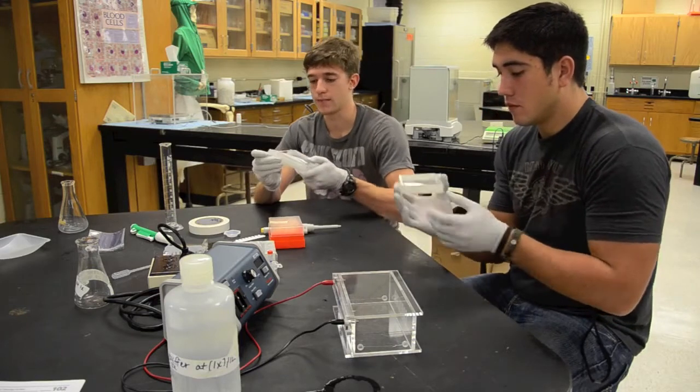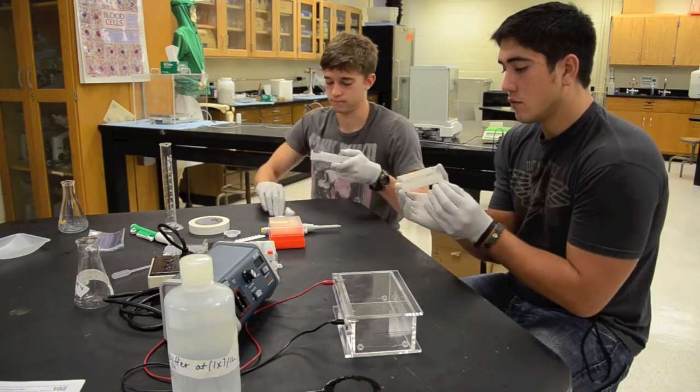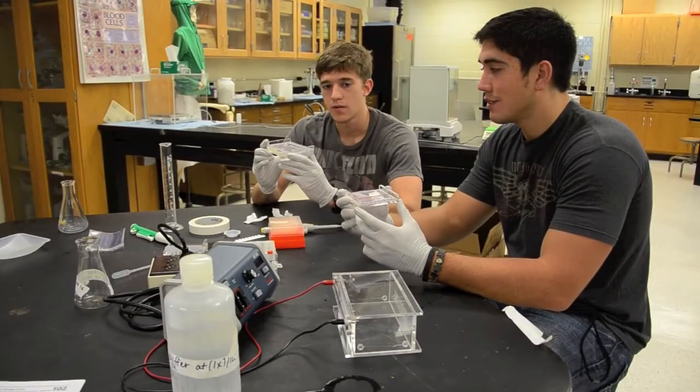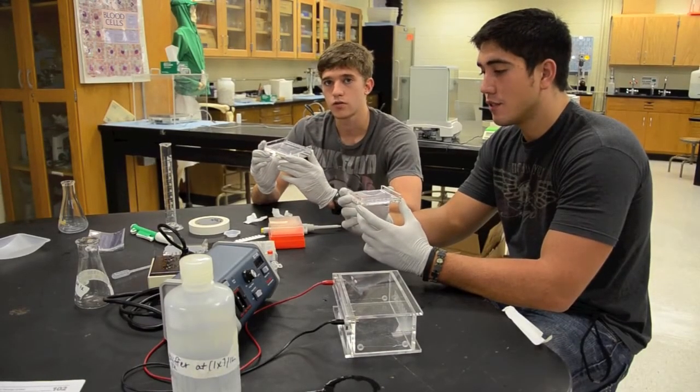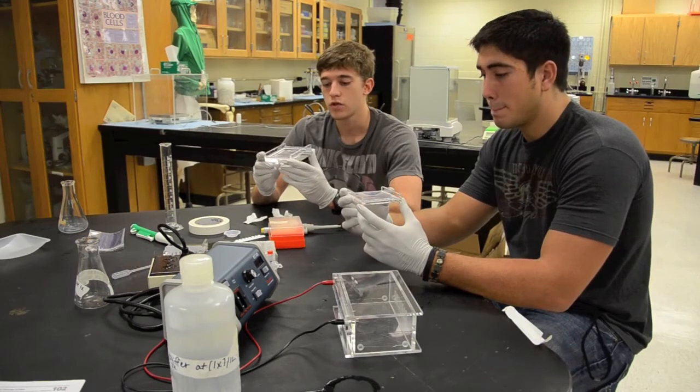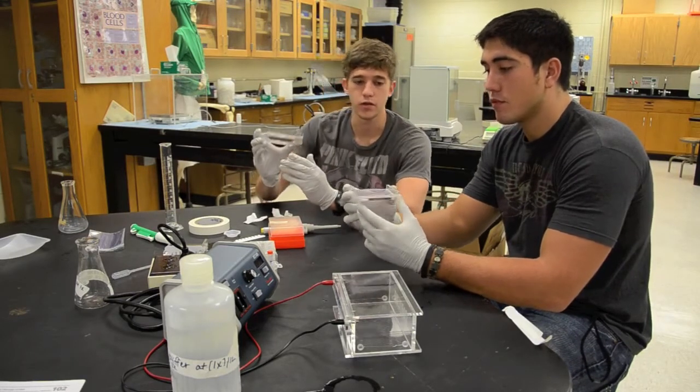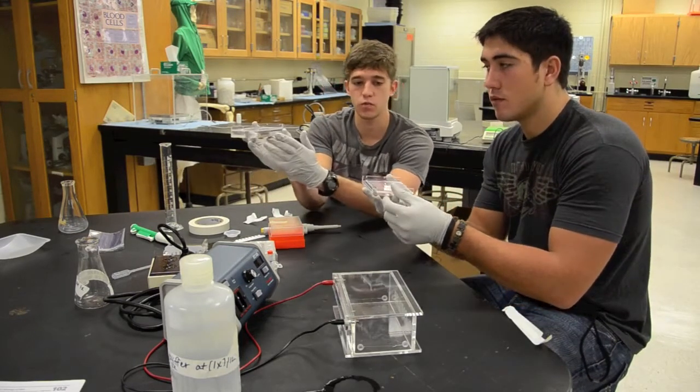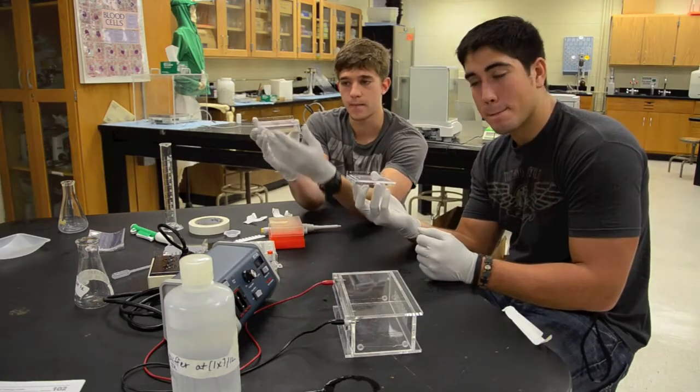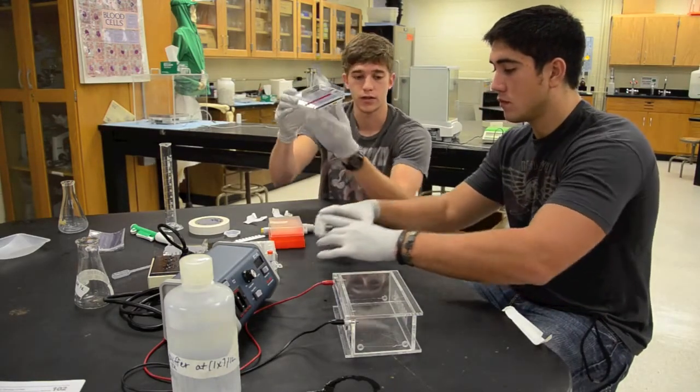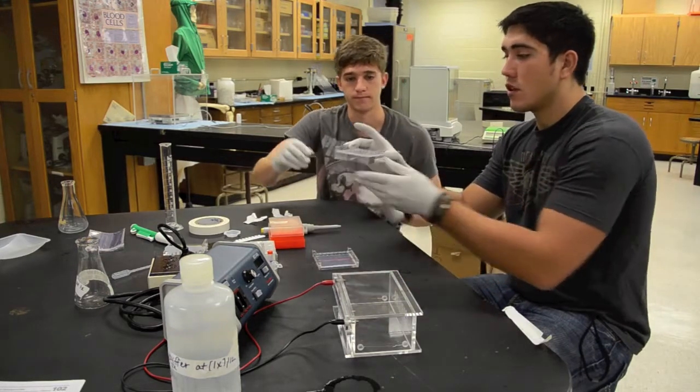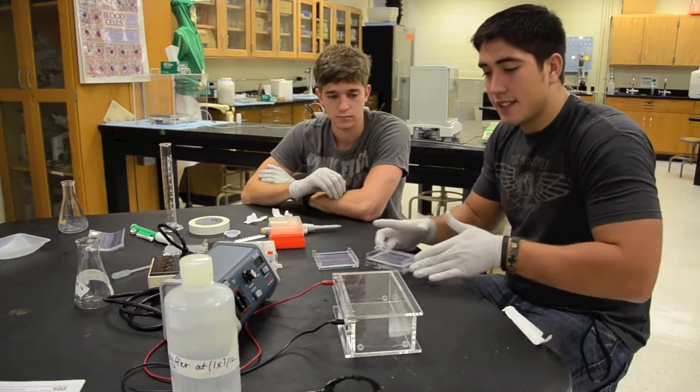Now that we've removed the comb and we have our wells it's time to load into the electrophoresis chamber. Now to do this you're obviously going to first want to remove the tape. Now before loading into the electrophoresis chamber it's important to check which plate you have. There's two different sizes, you have a thick base one and a small base.